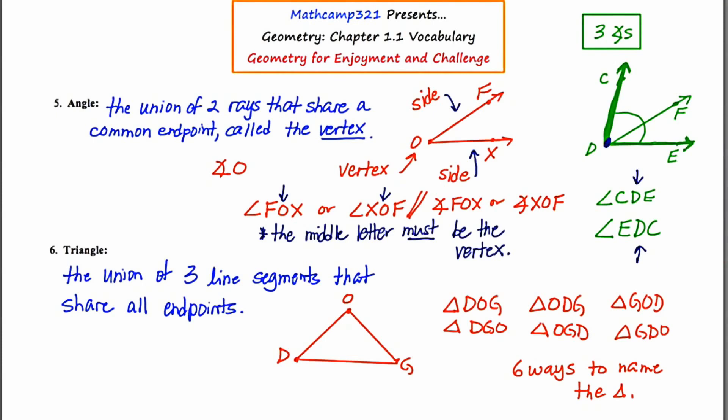Okay, one final thing that I want to say. I've seen this sometimes in books. Triangle D-O-G is equal to line segment D-O union line segment O-G union line segment D-G. That's basically describing what a triangle is using mathematical symbols. And I've seen some books discuss it like that. I'm going to go back and do the same thing for this angle up here. Angle F-O-X equals the union of ray O-F joined together with ray O-X.